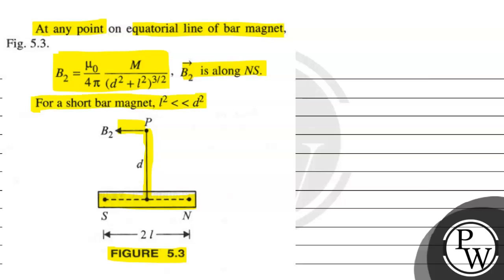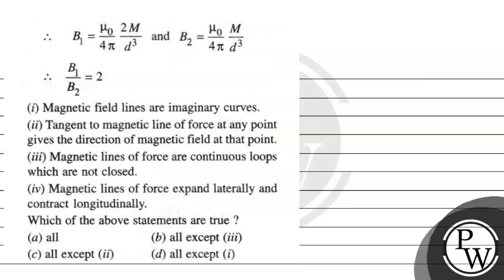For a short bar magnet, l square is less than d square. Here B1 ki value is mu naught upon 4 pi, 2m upon d cube. And B2 ki value is mu naught upon 4 pi, m upon d cube when l square is much smaller than d square. And the ratio of B1 upon B2 is 2.